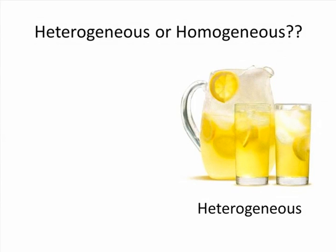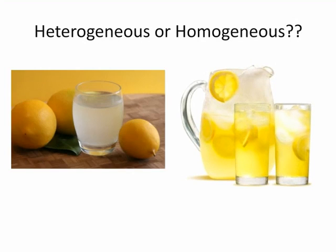If another person were to think of a pitcher of lemonade with lemon slices and ice added, then it would be correct to consider this a heterogeneous mixture. Because the lemon slices and ice cubes are visible, it is easy to see that the mixture cannot be uniform. As you can see, using the terms heterogeneous and homogeneous can depend upon the way you think about the example.